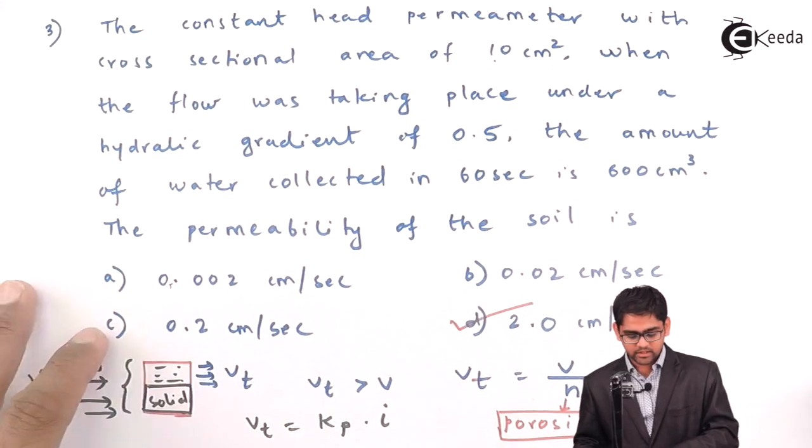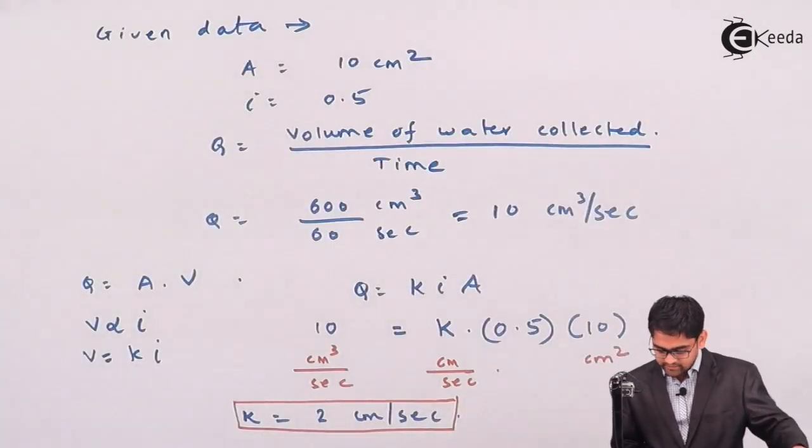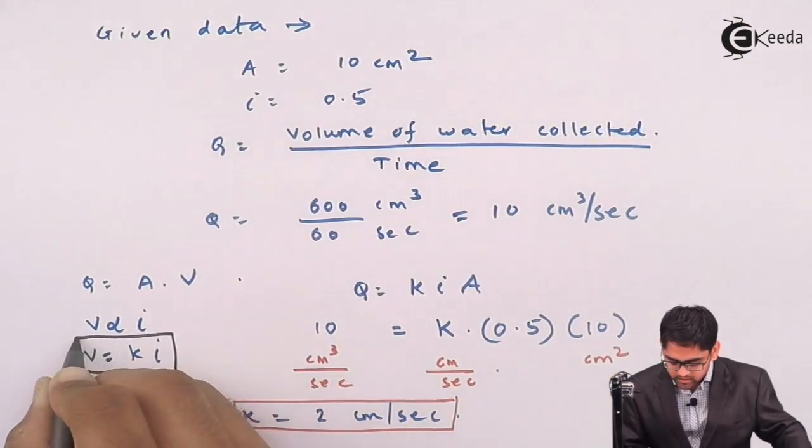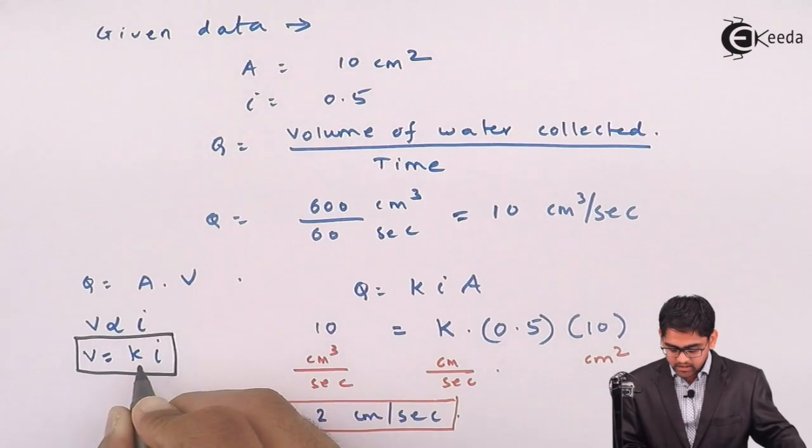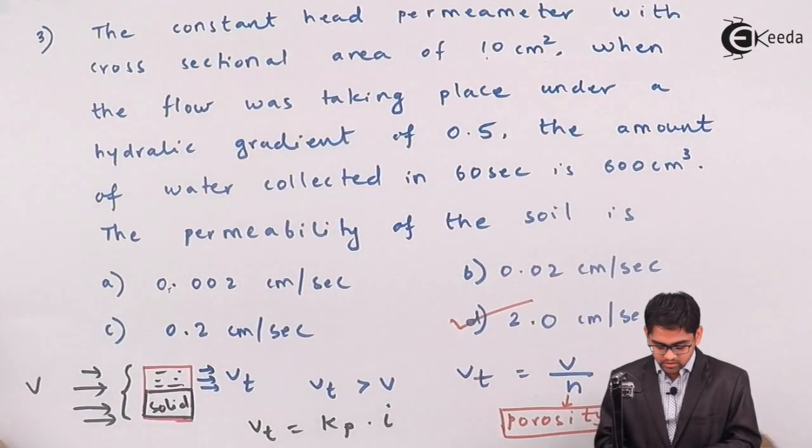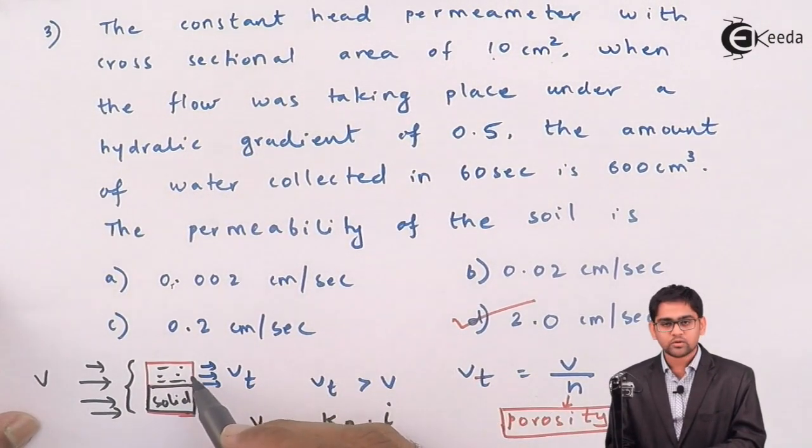Because in question, they were just asked about only the permeability of soil. So, K value, which is nothing but V equals to Ki. So, for this, remember, this is coefficient of permeability and this is the superficial velocity V, which is occurring along the total cross-sectional area.